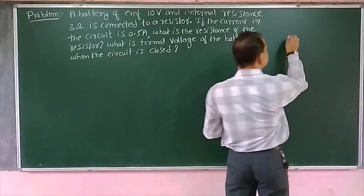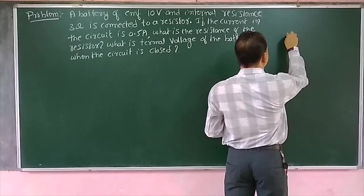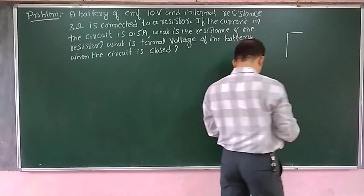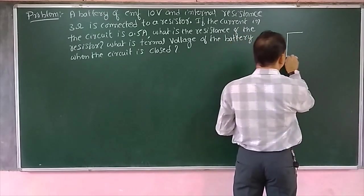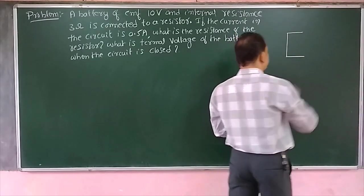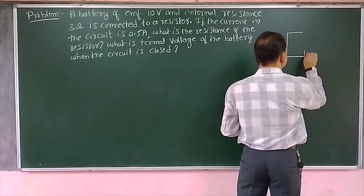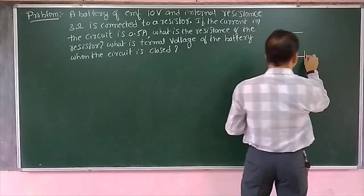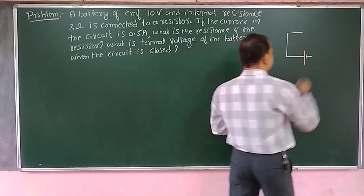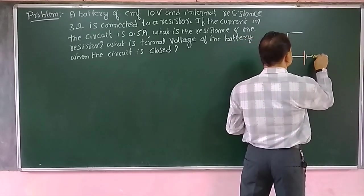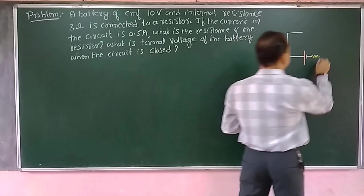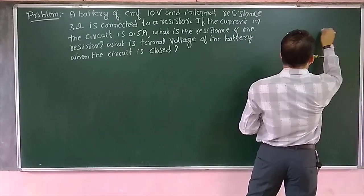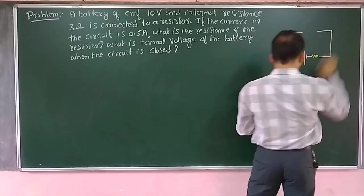For that, we will write a simple circuit. This is a battery with an internal resistance. This is the internal resistance of the battery. Now it is connected to a load — an external resistor.